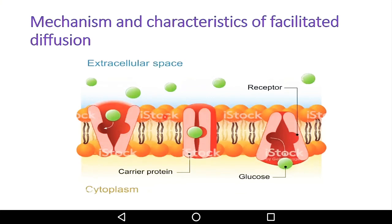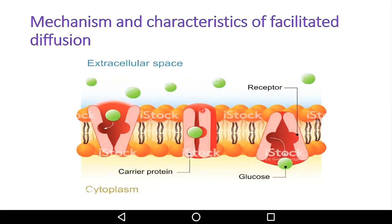Facilitated diffusion is characterized by a concentration gradient — movement is assumed to be from high to low concentration. It possesses a considerable degree of specificity and is often inducible. The cell will produce permeases in instances where the environment possesses the substrate to be transported.